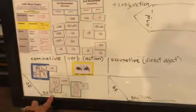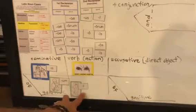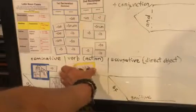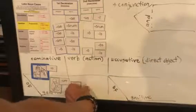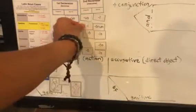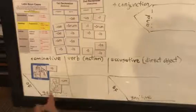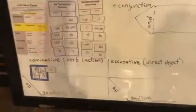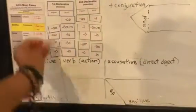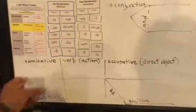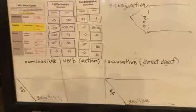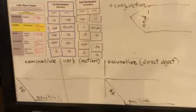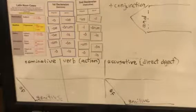Again, Maria Filium Dei videt. Let's set up our next one. This is genitive, this is accusative, singular. And then we have nominative, also singular. Number three: Christians praise the victory of Christ.